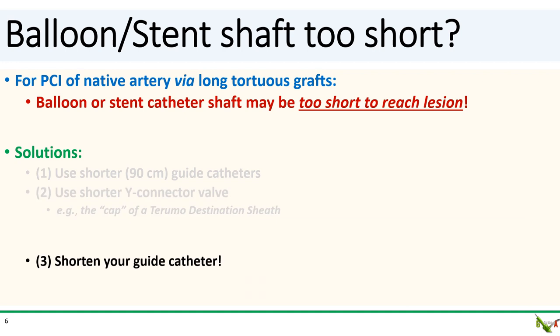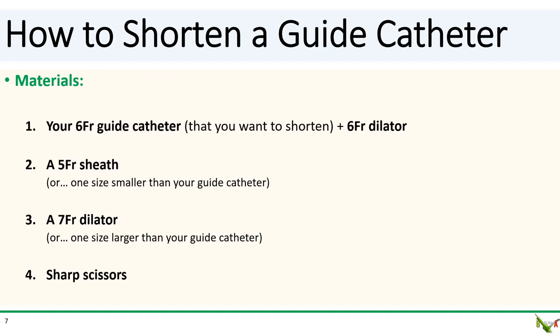If you need more than just a couple of centimeters, the other option is to shorten your guide catheter. You'll need a few things: first, the guide catheter you want to shorten — we'll use a 6 French guide as an example — and the 6 French dilator that came with the sheath. Second, a sheath one size smaller than your guide catheter; in our example, a 5 French sheath. Third, a dilator one size larger than your guide catheter; in our example, a 7 French dilator. And fourth, a pair of sharp scissors.